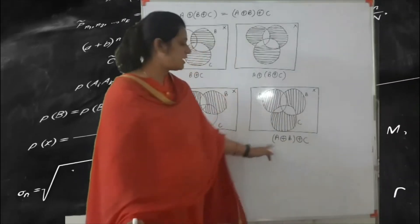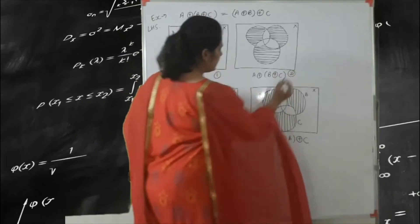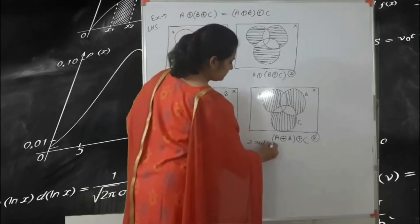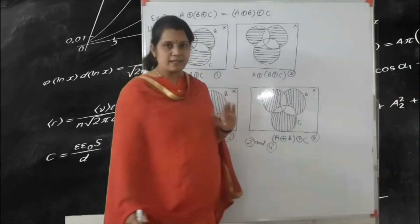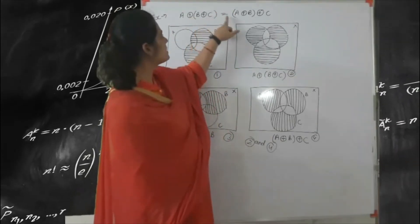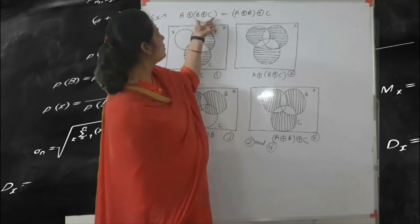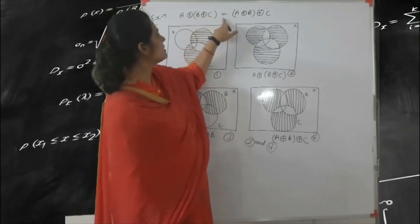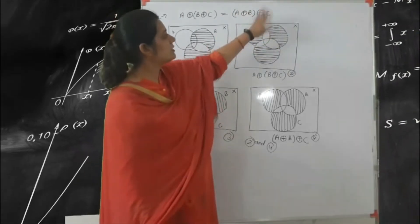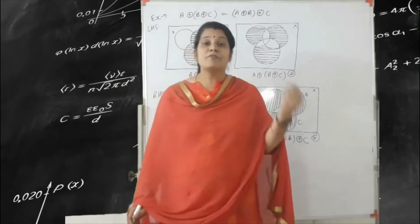This is your first and second diagram; this is your third and fourth diagram. According to the second and fourth, both diagrams are the same — that means this is the associativity law. A ring sum B ring sum C is equal to, changing only the bracket: A ring sum B ring sum C is equal to A ring sum B in the bracket, ring sum C. This is the associativity law and we found it easily with the help of the Venn diagram.